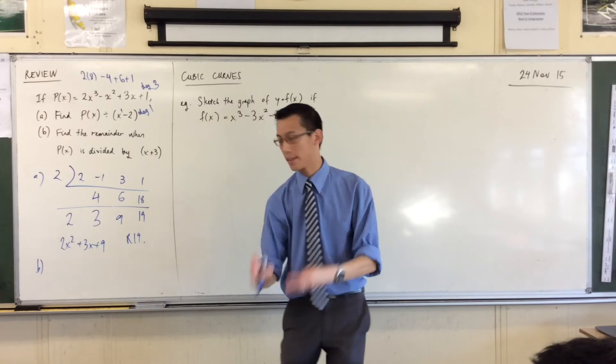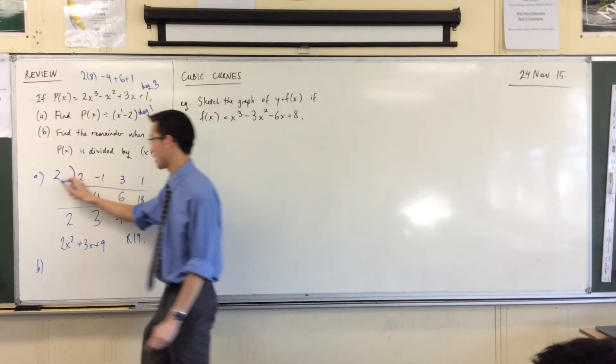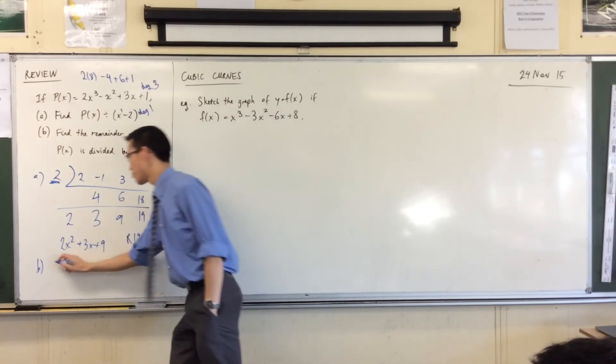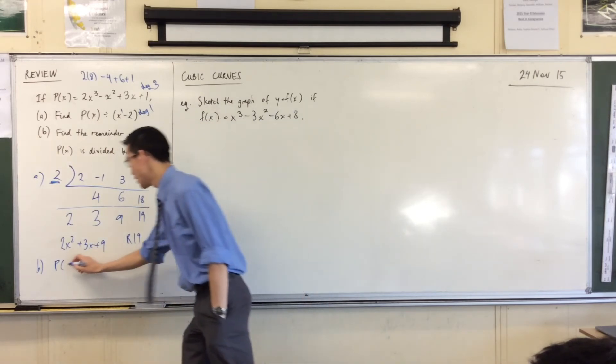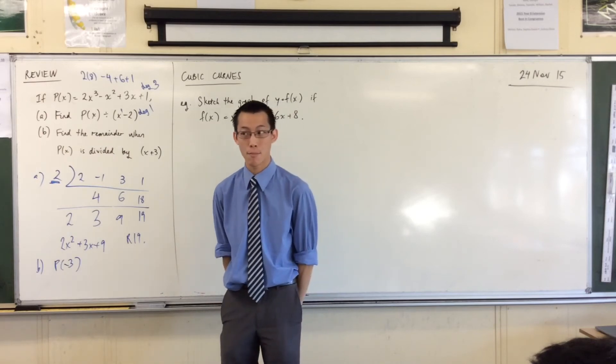So in order to find the remainder directly, all you need to do is substitute in the opposite of this number, just like we did here, right? The opposite of this number is the key. So therefore, I'm going to substitute in P of, what will be the opposite of the number? It'll be negative 3, very good. So I'll pop that in, and this is just going to straight out give me the remainder.